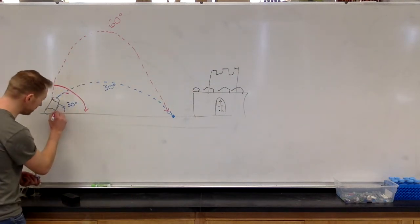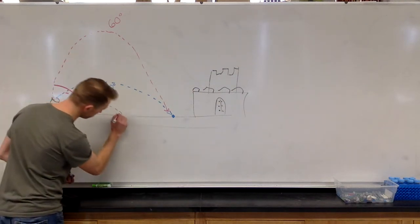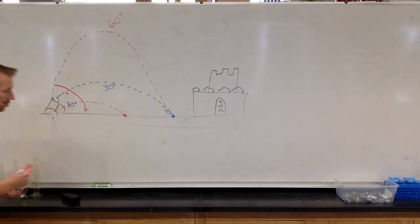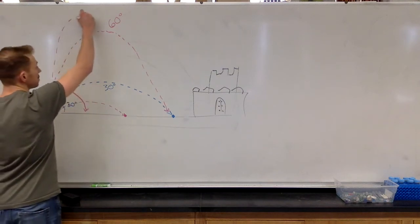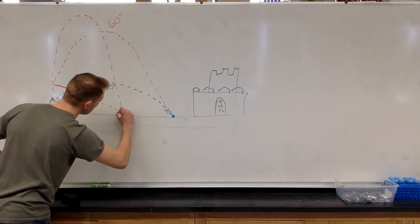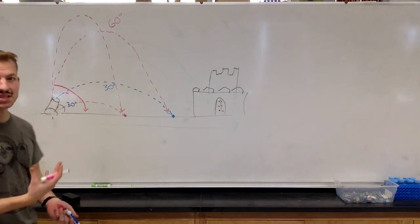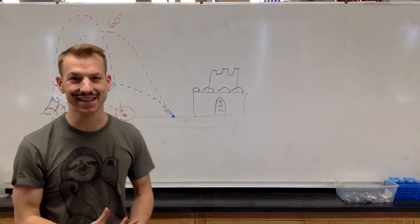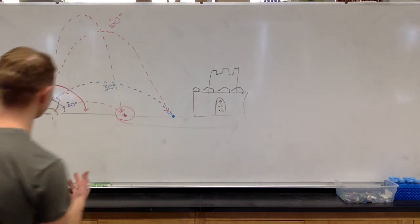So if we were to launch something at 15 degrees, it would go much shorter. Or if we were to launch it at 75 degrees, it would go much higher. But because these two are complementary angles, the point at which it lands, the range, is exactly the same, which is pretty awesome.